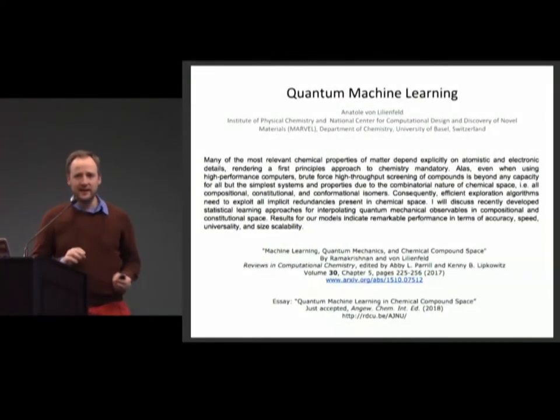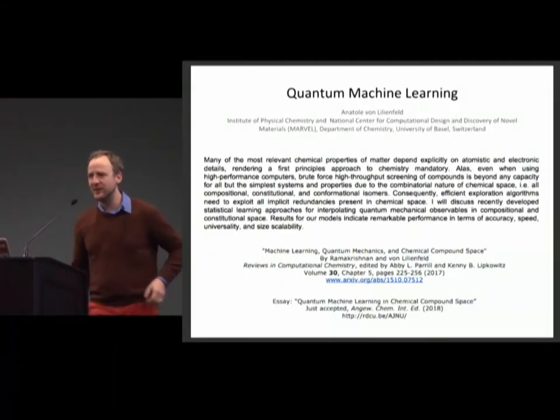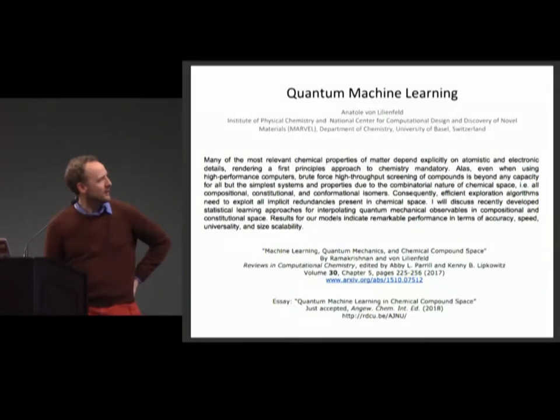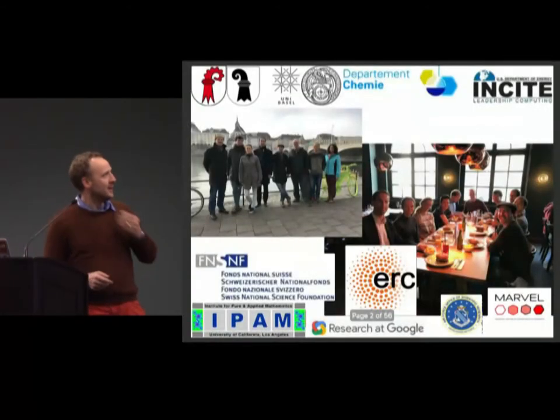So, we use classical machine learning models to model quantum properties of matter. In particular, chemistry is an interesting field because it's dictated by the physics of the valence electrons, which are quantum objects. The equations you need to solve are quantum mechanical equations, and we try to use machine learning to do that.